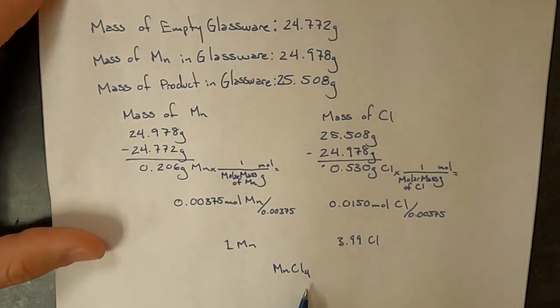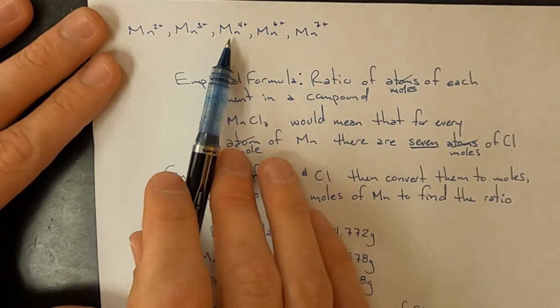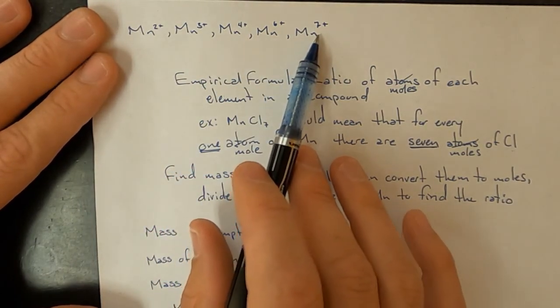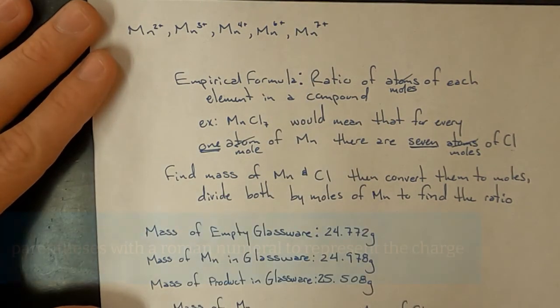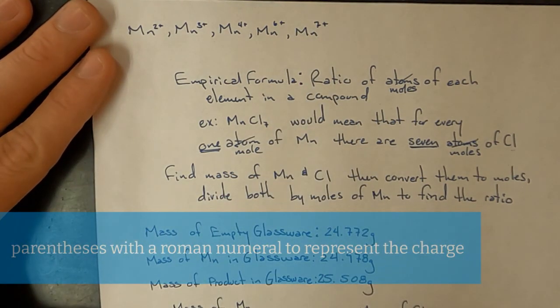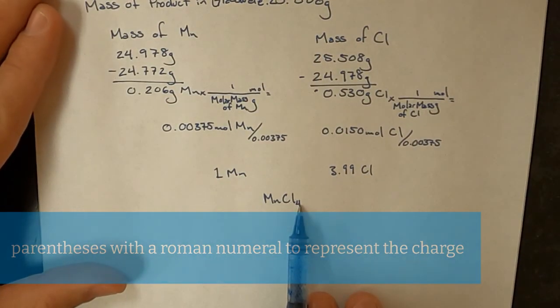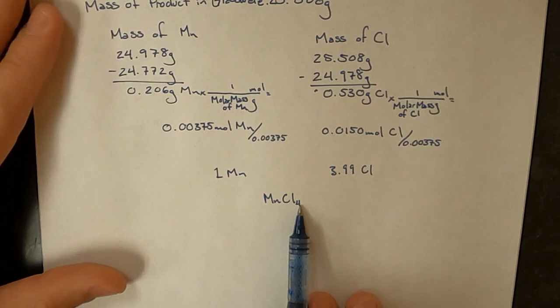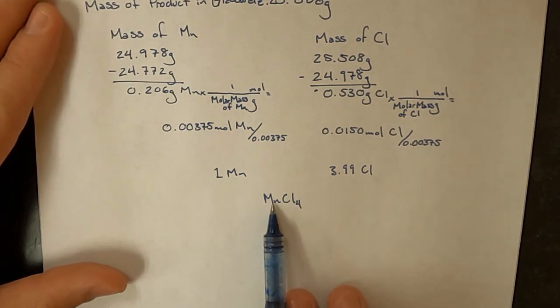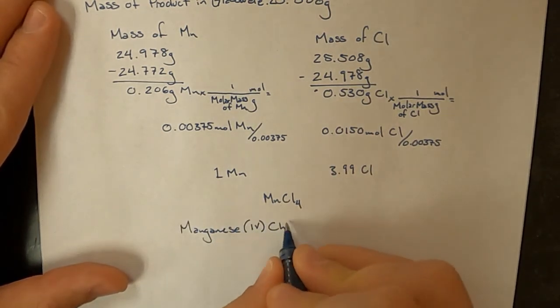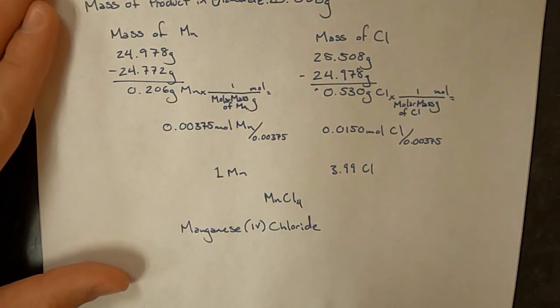Lastly, to write the name of this, when you have a metal that can have multiple charges or oxidation states, you need to write the correct one in parentheses when you write its name out. And so because there are four chlorines, each with a 1- charge, the manganese is a 4+ charge, and I need to write that it's manganese with a 4+ charge. Again, I know that this is not the correct answer, but this is what my data show.